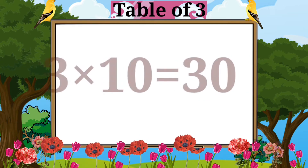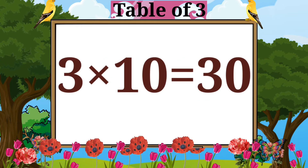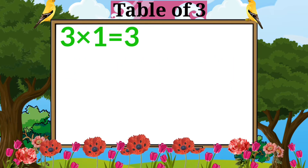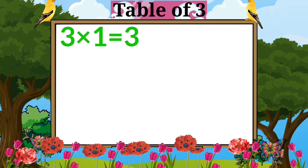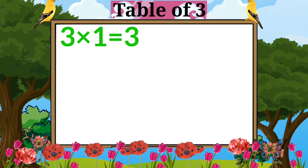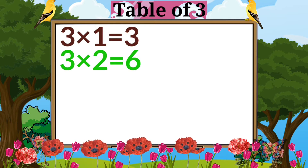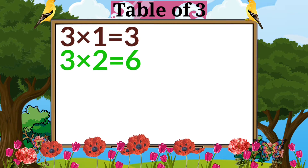Three tens are thirty. Three ones are three. Three twos are six.